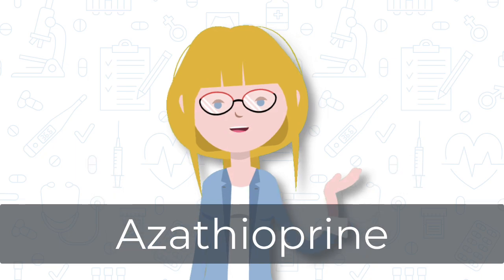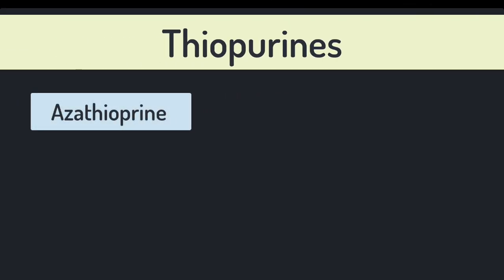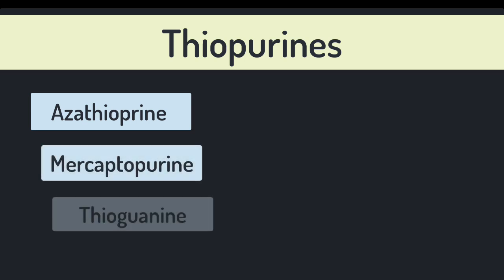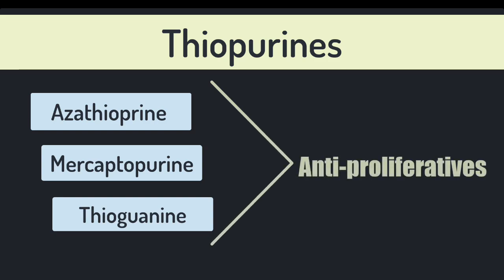So without further ado, let's get to know azathioprine. Azathioprine belongs to a group of drugs known as the thiopurines, which also includes mercaptopurine and thioguanine. All of these drugs are anti-proliferative medications which interfere with the cell cycle.